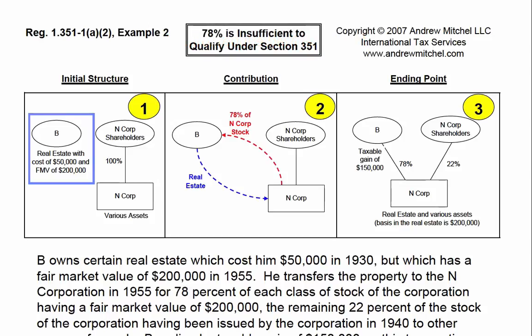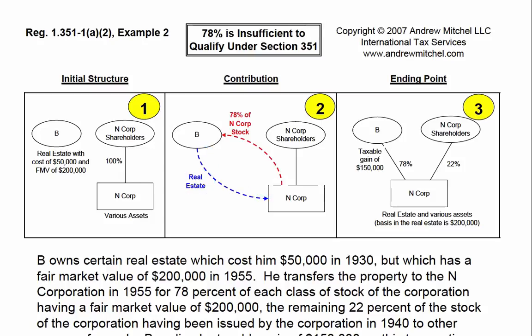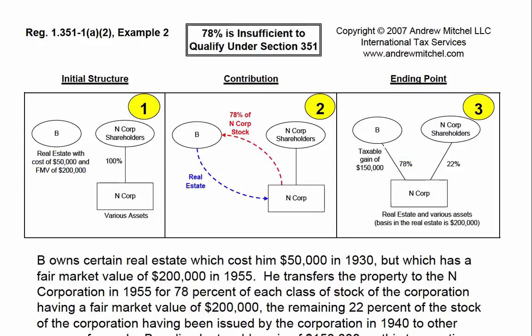In the example, B owned real estate with a cost basis of $50,000 and a fair market value of $200,000. B transferred the real estate to Corp N in exchange for 78% of the stock of Corp N. Since B did not own at least 80% of Corp N, the transaction did not meet the requirements of Section 351 and B is required to recognize gain.